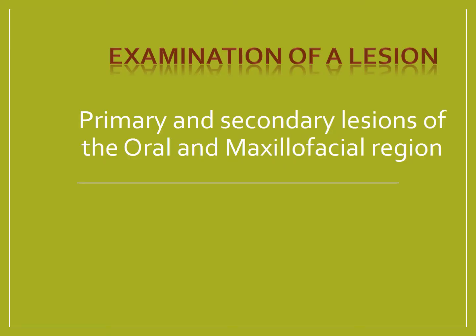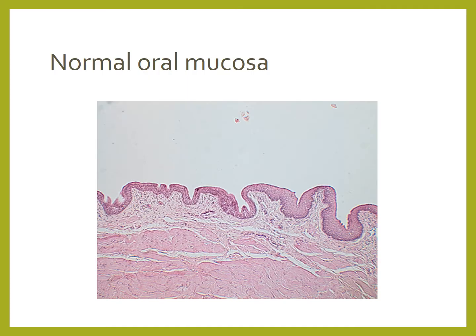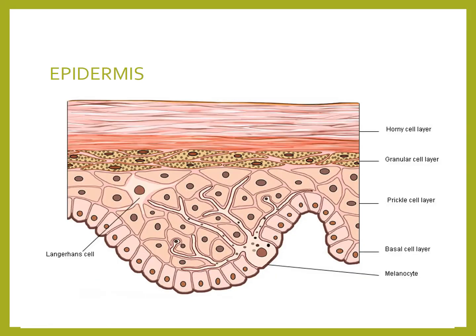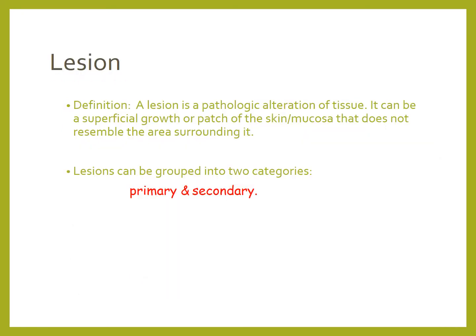When talking about examination of a dermatological or oral lesion, we first classify them as primary and secondary lesions. If this is your normal mucosa in histopathological section, you see the epithelium as well as the connective tissue. The epidermis is very similar to the epithelium, except that there is a horny layer and a granular cell layer which is a lot thicker in comparison to the epithelium inside the oral mucosa.